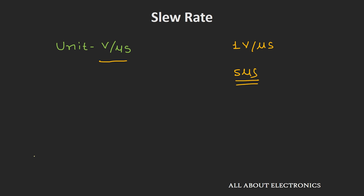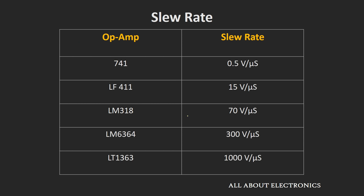Different op-amps have different values of slew rate, varying from 0.1V per microsecond up to 1000V per microsecond. Here is a list of a few op-amps and their corresponding slew rates. The general purpose 741 series op-amp has a slew rate of 0.5V per microsecond, while op-amps from Linear Technology can be as fast as 1000V per microsecond. Depending upon your application, you need to select an op-amp with a specific slew rate so that your output will not get distorted.